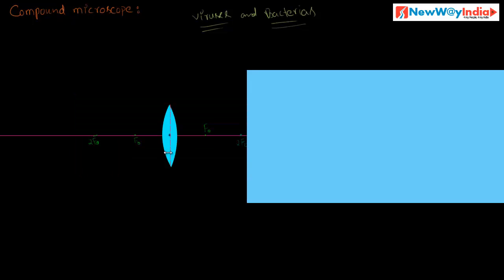The smaller tube consists of a convex lens having a lesser focal length. This is called the objective lens.